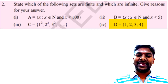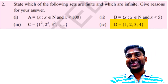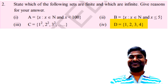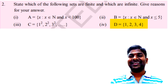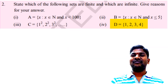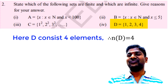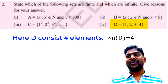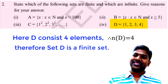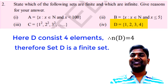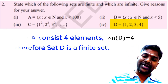Now for another example: D = {1, 2, 3, 4}. Is it finite or infinite? The number of elements n(D) = 4. We can count that there are 4 elements in set D. So it is possible to count the number of elements in set D. Therefore, D is a finite set.